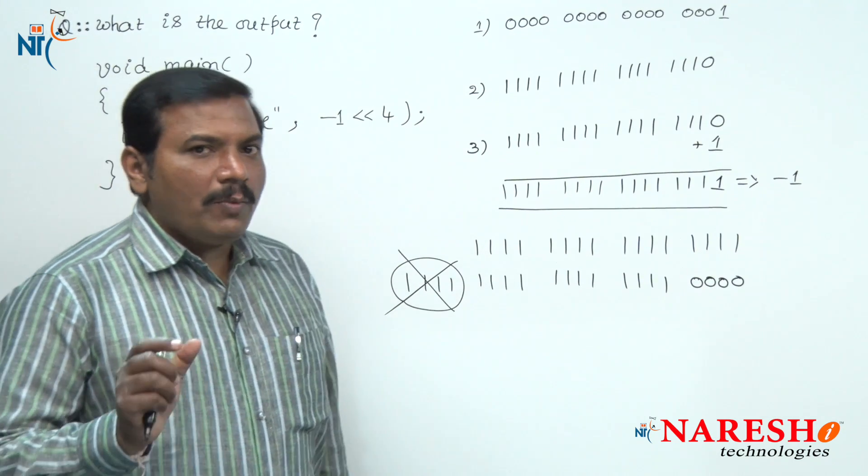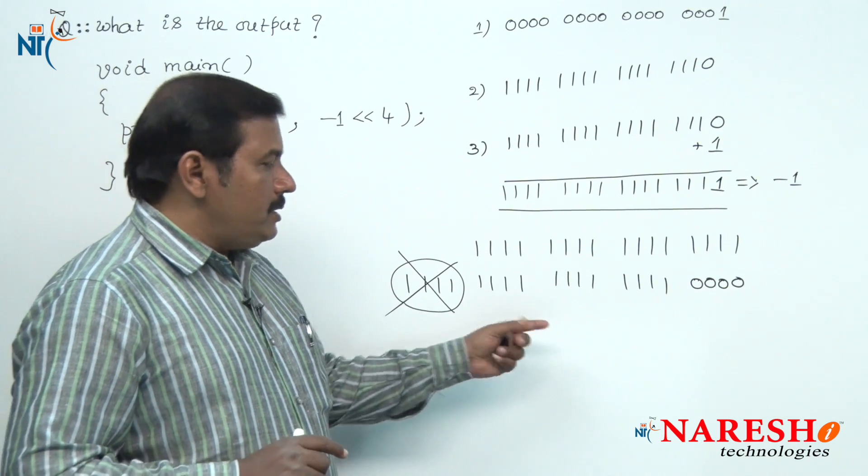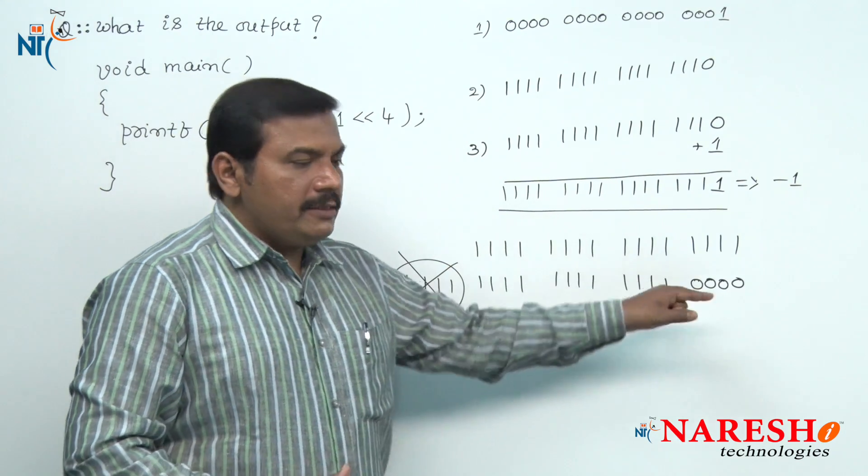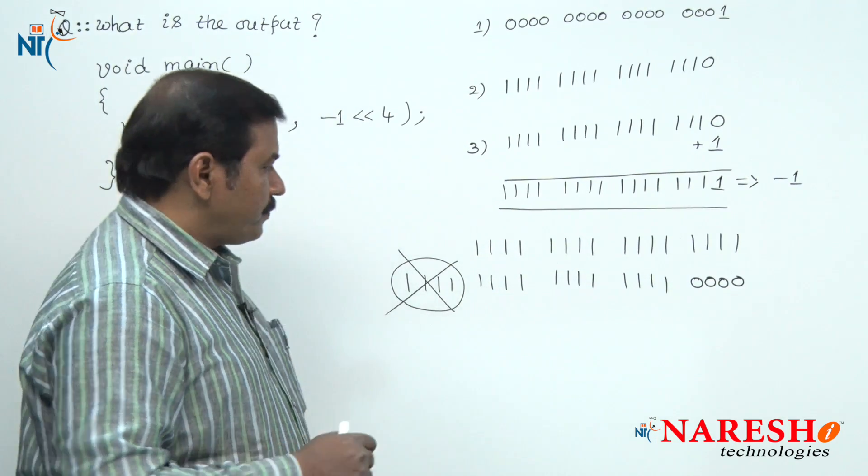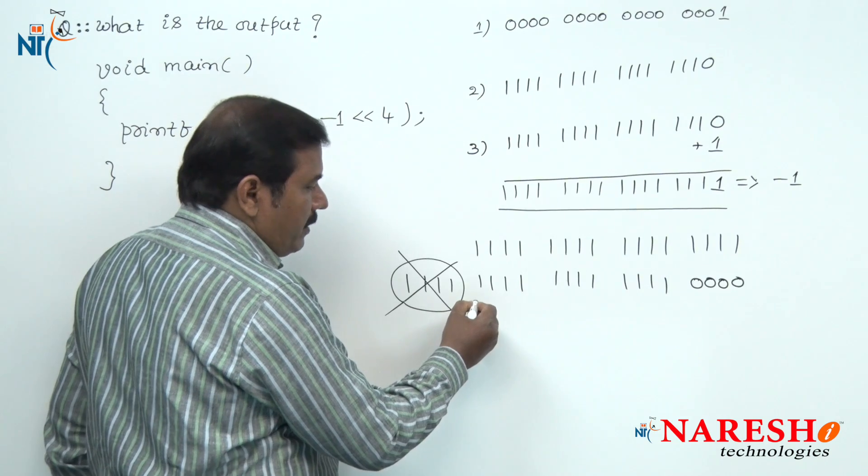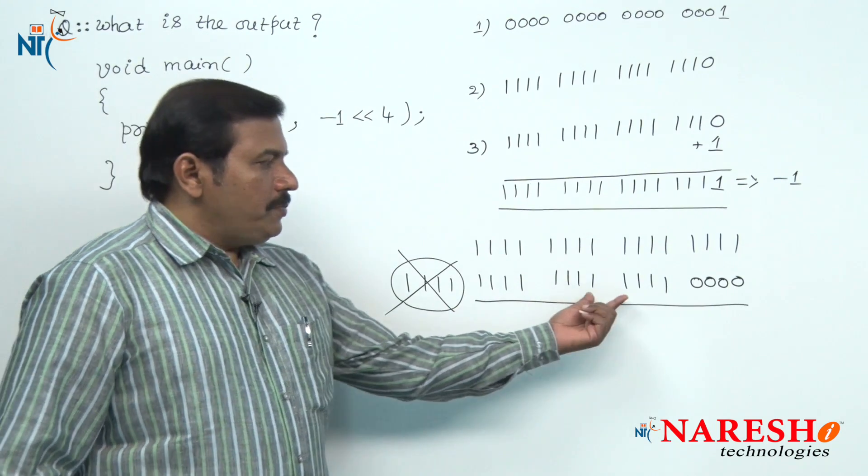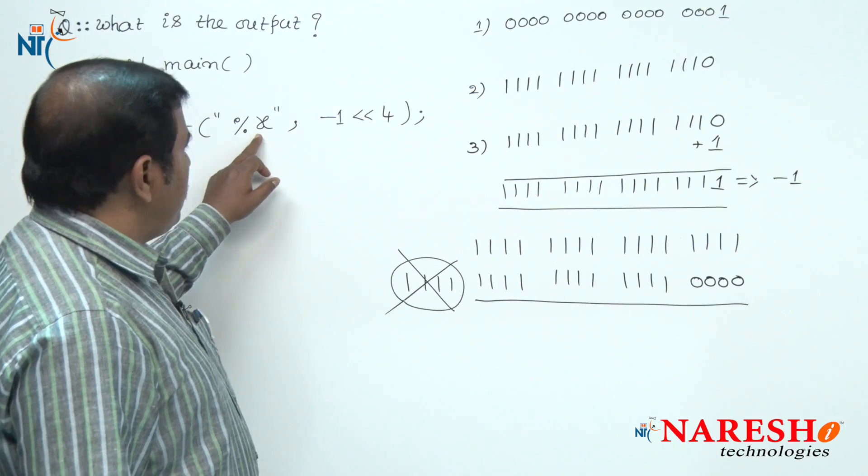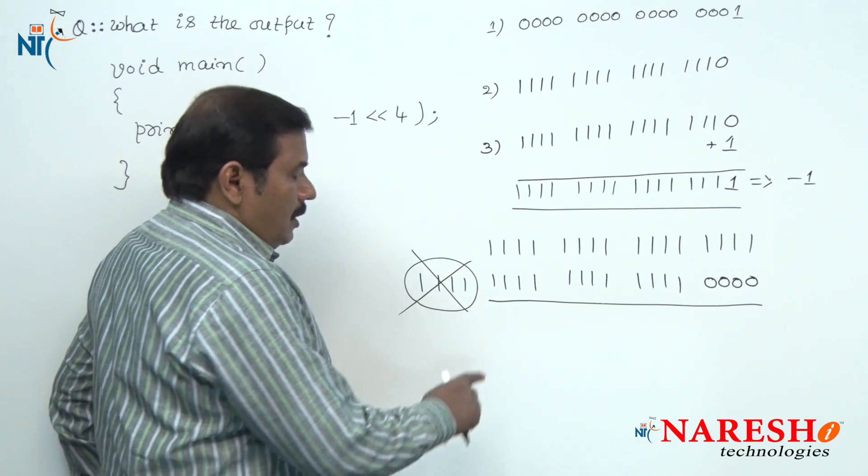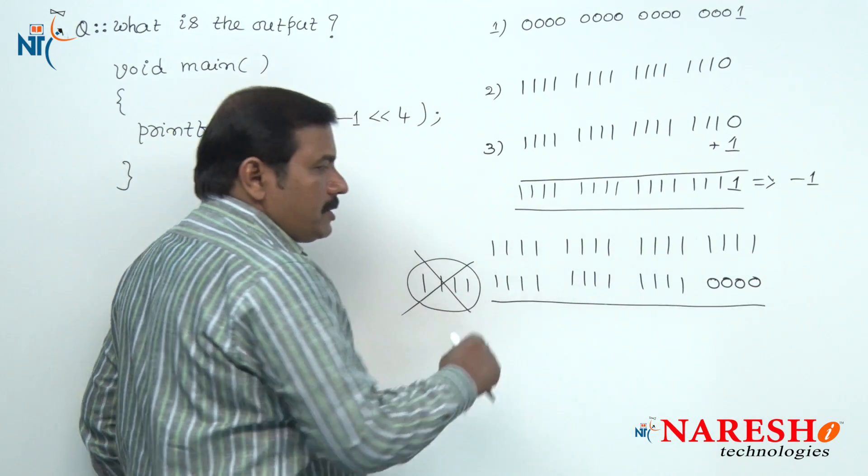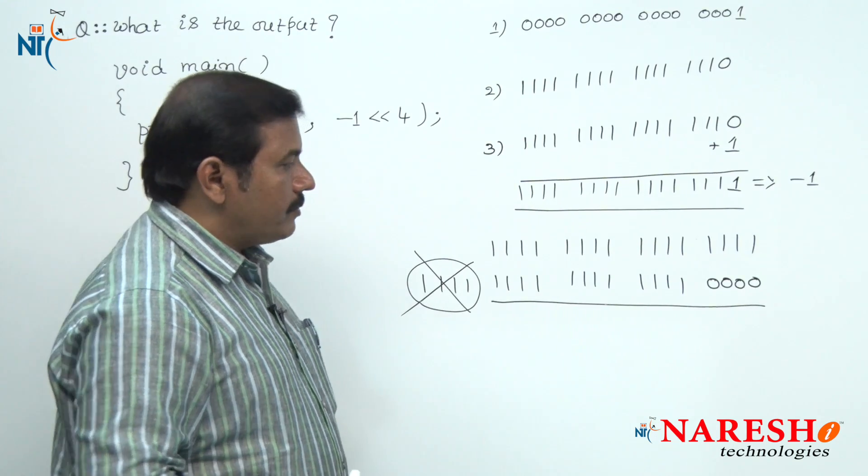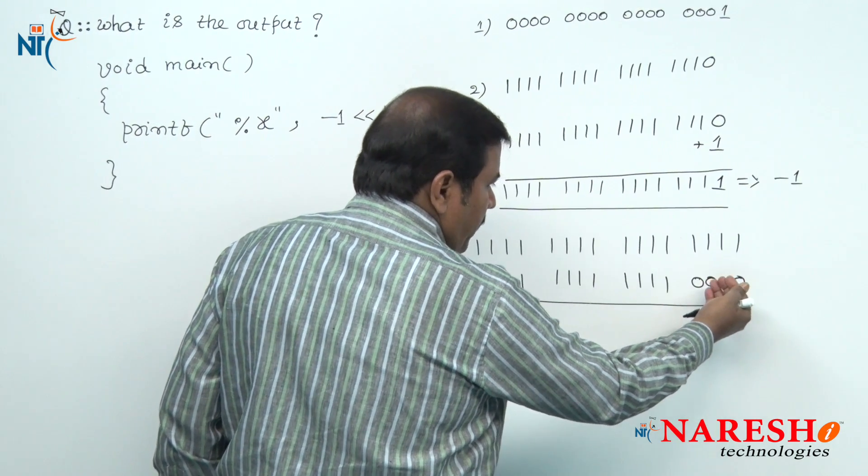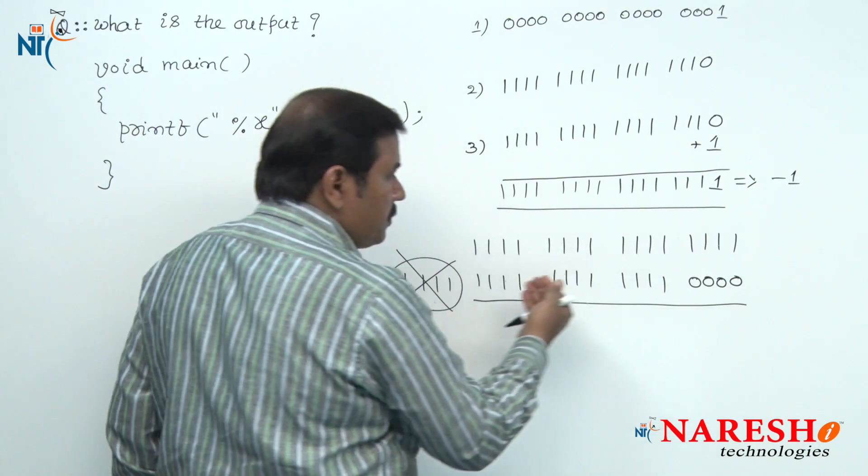As here the second operand is 4, hence left side 4 bits are deleted, right side additionally 4 zeros are appended. Now this is the binary code left. For this binary code, now we have to write the equivalent hexadecimal value. How to convert this 16 bit binary code into hexadecimal? First of all we have to group the 4 bit binary codes from right to left.